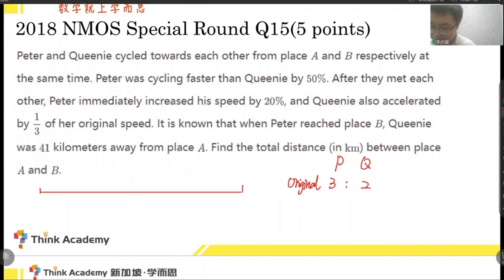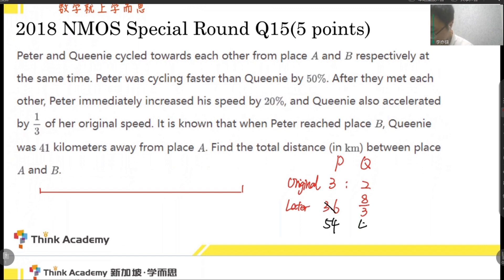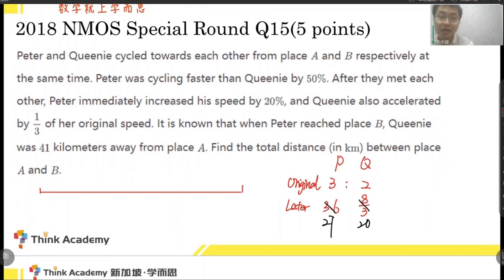After they meet, Peter increased speed by 20%, making it 3.6, and Q accelerated by one third, making it 8 over 3. So we get a new speed ratio. Multiplying both by 15 to get integers, we get 54 to 40, simplifying to 27 over 20. So the original speed ratio is 3 to 2, and the later speed ratio is 27 to 20.